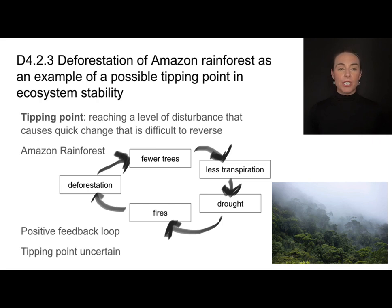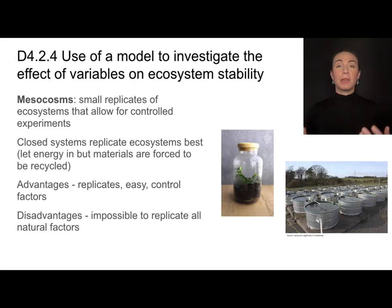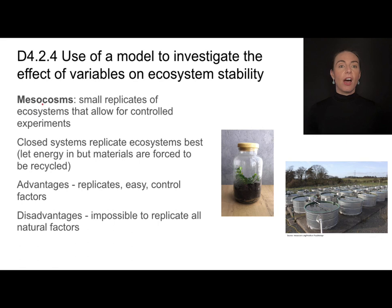The difficult part for ecologists is that the tipping point can be uncertain. At what point deforestation will kick off this positive feedback loop that's impossible to come back from, we don't always know. From an experimental point of view, one of the really interesting tools we have to investigate variables that impact ecosystem stability are things called mesocosms.